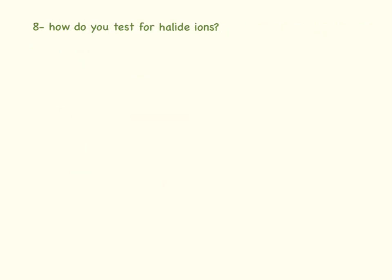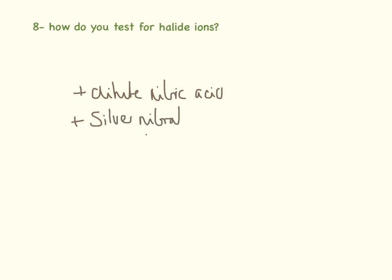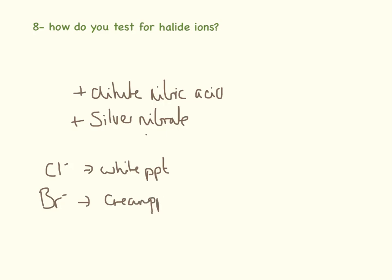So how do you test for halide ions? You need to add dilute nitric acid, and then you need to add silver nitrate. The results are going to be: chlorine gives a white precipitate, bromine gives a cream precipitate, and iodine gives a yellow precipitate. For each of your marks, you need to tell me the two things that were added.